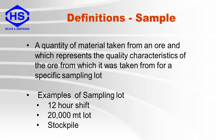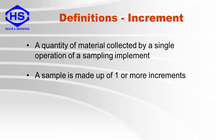A sample is a quantity of material taken from an ore which represents the quality characteristics of the ore from which it was taken for a specific sampling lot. A lot could be a 12-hour shift of plant operation, 2,000 tons of feed, or a stockpile. An increment is a quantity of material collected by a single operation of a sampling implement. Therefore a sample is made up of one or more increments.